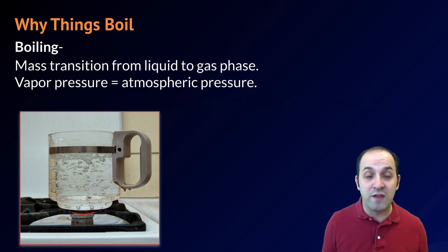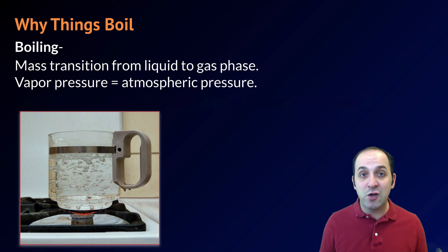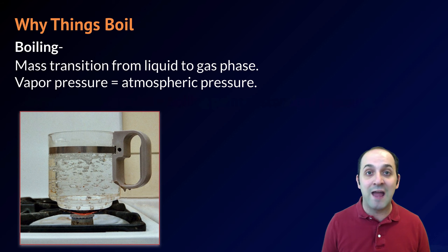This will continue until all of the particles have become a gas and looks like the classic boiling that you probably are familiar with. There are two ways to boil a substance. The first is just to heat the substance up. What you're doing there is increasing the vapor pressure of the substance until such point as the substance's vapor pressure equals or exceeds the atmospheric pressure.